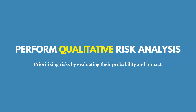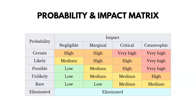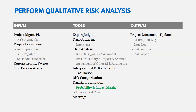Now we perform qualitative analysis — prioritizing risks by evaluating their probability and impact. The key inputs are the risk register and the risk management plan. One key tool is the probability and impact matrix, which documents what certain probability and impact scores represent. Probability is how likely a risk is to happen; impact is how bad it will be. Other techniques include interviews, expert judgment, facilitating meetings, and putting risks into categories. The key output is an update to your risk register.